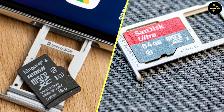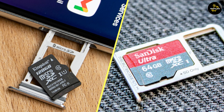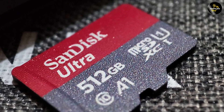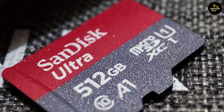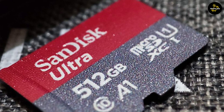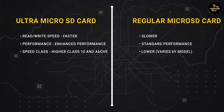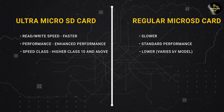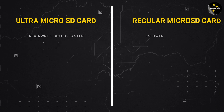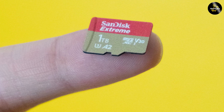Pros and cons. Now let's summarize the pros and cons of both ultra micro SD cards and regular micro SD cards. The main pros of ultra micro SD cards are their higher storage capacity and faster read and write speeds, which can be beneficial for tasks such as transferring large files or recording high quality video. The main cons are their higher price and smaller physical size. The main pros of regular micro SD cards are their affordability and compatibility with a wider range of devices. The main cons are their lower storage capacity and slower read and write speeds.